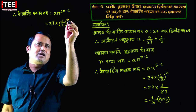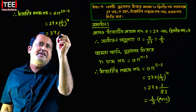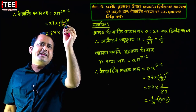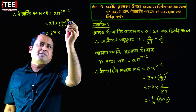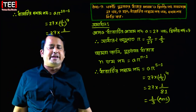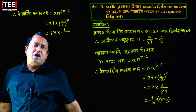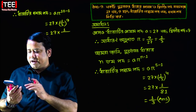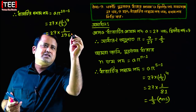10 minus 1 is 9, equal to 27 into 1 to the power of 9, and 3 to the power of 9. That means 9 times 3, and 9 times 3 minus 1. And 3 to the power of 9 gives 19683.